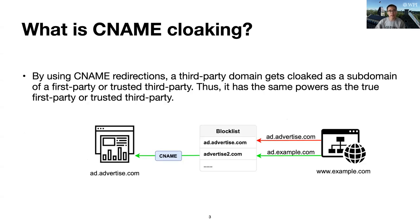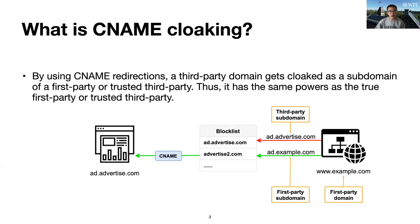So what's synonym cloaking? By using synonym redirections, the third-party domain gets cloaked as a subdomain of a first-party or trusted third-party, and thus has the same powers as the true first-party or trusted third-party. This is called synonym cloaking, which is a problem that has been observed in recent years. For example, ad.advertise.com will be blocked by the block list, but using synonym cloaking can let it pass the block list and successfully deliver the advertisement to the example website. In this example, the example website is a first-party domain, and ad.advertise.com is a third-party subdomain. It uses a first-party subdomain, which is ad.example.com, to hide itself.